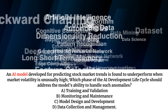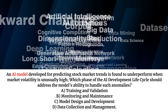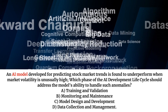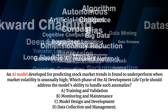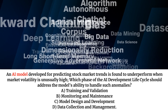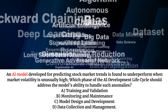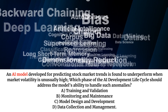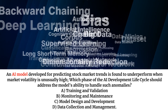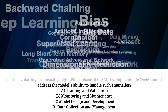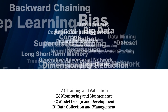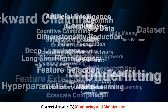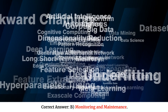An AI model developed for predicting stock market trends is found to underperform when market volatility is unusually high. Which phase of the AI development lifecycle should address the model's ability to handle such anomalies? A. Training and validation. B. Monitoring and maintenance. C. Model design and development. D. Data collection and management. Correct answer: B. Monitoring and maintenance.